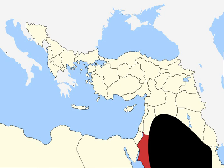1994, Israel-Jordan Treaty of Peace. 1999, King Abdullah bin al-Hussein became the fourth king of the Hashemite Kingdom of Jordan.